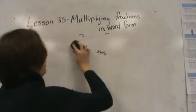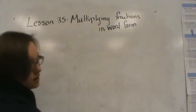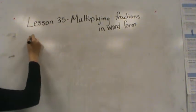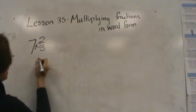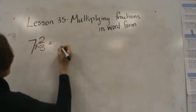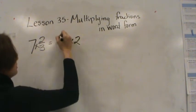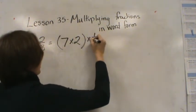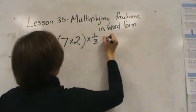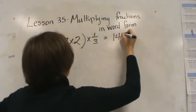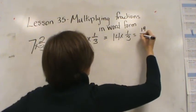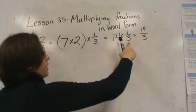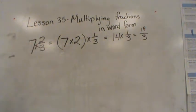Now let's do it the opposite way — let's work a little bit backwards. So if I have 7 times 2 thirds, 7 times 2 thirds is equal to 7 times 2 times 1 third, which is also the same as saying 14 times one-third, which is also the same as saying 14 thirds. Because if I counted one-third 14 times, I would get 14 thirds.